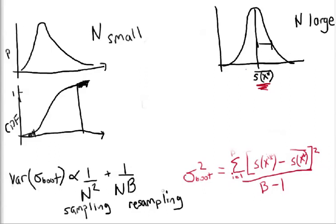The second reason we can have error in our bootstrap sigma is random error due to not enough resampling. Typically B is something like 1,000 or 10,000 to reduce this second term in the variance.